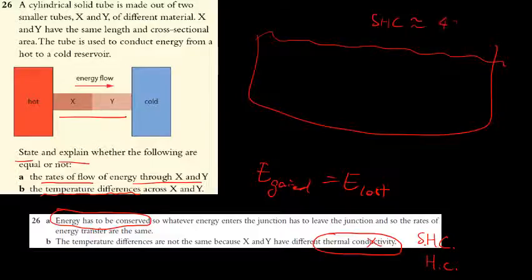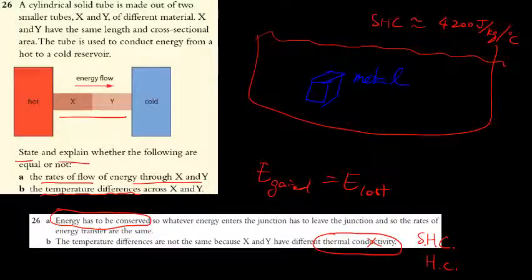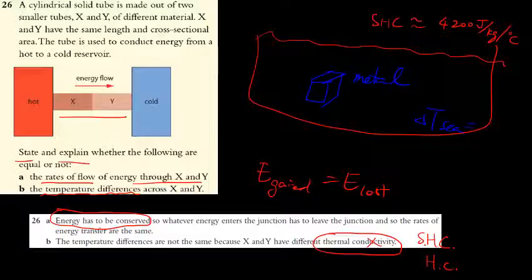The specific heat capacity example: a hot metal inside a large ocean — the change in sea water temperature is minimal, essentially nothing, while the hot metal very quickly reaches the temperature of the sea water. This is the idea that temperature difference would not be the same across different materials.